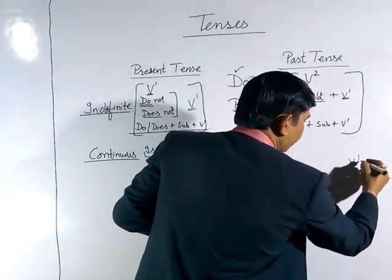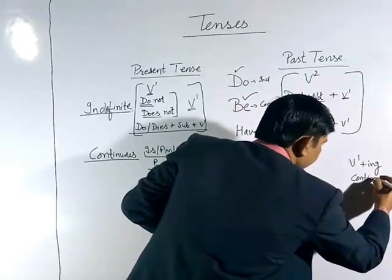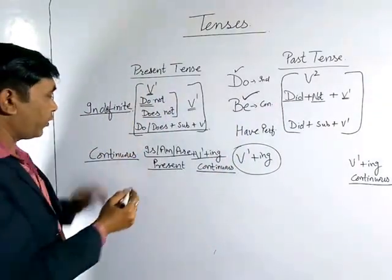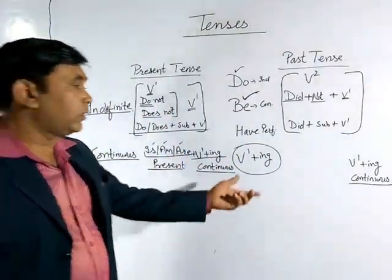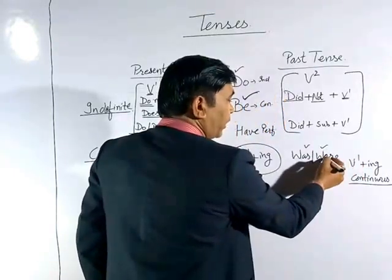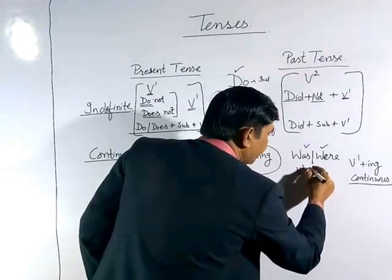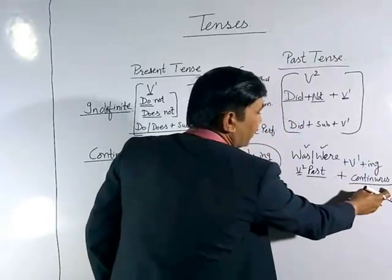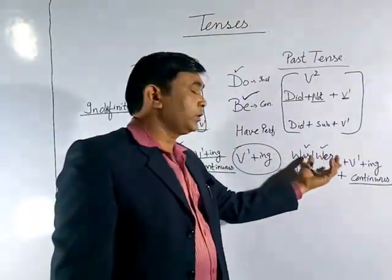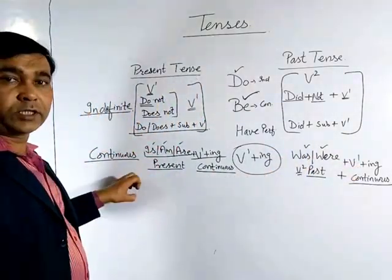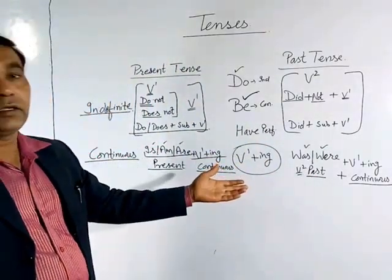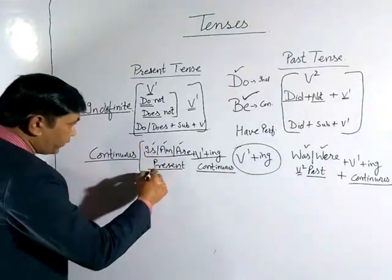For past continuous, we again use verb first form plus ING to show continuity. We want past continuous, so we take the past form of 'be' — which is 'was' or 'were'. 'Was' is singular and 'were' is plural. 'Was/were' is the verb second form, meaning past — so past plus continuous gives us past continuous. For negative we use 'was/were not', and for interrogative we place 'was/were' before the subject.